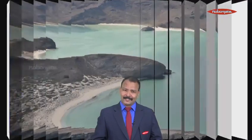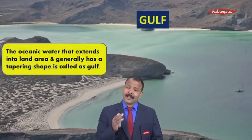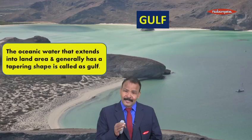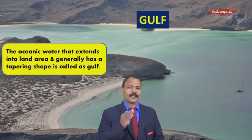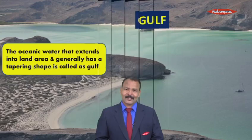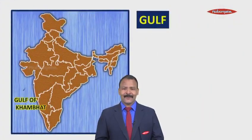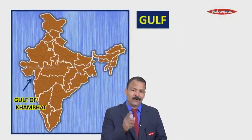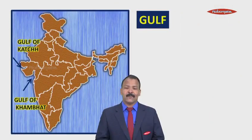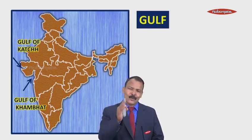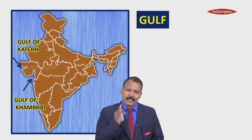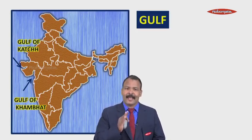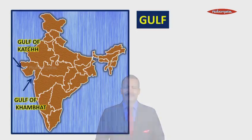After the strait, we come to the next water body: a gulf. A gulf is oceanic water that extends into a land area and generally has a tapering shape — it keeps on reducing. In India, two examples are the Gulf of Khambhat and the Gulf of Kutch. You can see that the water body keeps tapering as it moves inside the land.